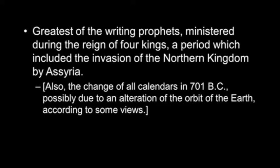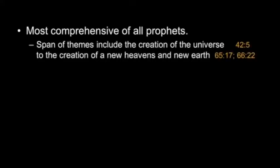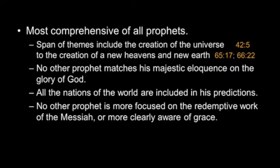Something we'll touch on is that all calendars on the planet earth changed in 701, and there's some evidence the orbit of the earth was altered. Isaiah is the most comprehensive of all the prophets. His span of themes includes the creation of the universe all the way through to a new heavens and a new earth. No other prophet matches his eloquence or his articulate writing, especially on the glory of God. All the nations of the world are included in his predictions, and no other prophet is as focused on God's redemptive work of the Messiah. There is no prophet in the Old Testament more clearly aware of grace than Isaiah.